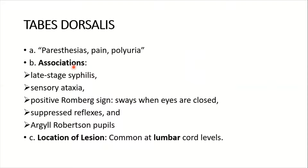The Tabes Dorsalis summary: number A is paresthesias, pain, and polyuria — these are the three P's. Associations include late-stage syphilis, also known as tertiary syphilis, sensory ataxia, positive Romberg sign — the patient sways when eyes are closed.